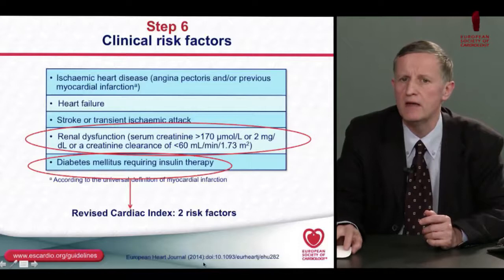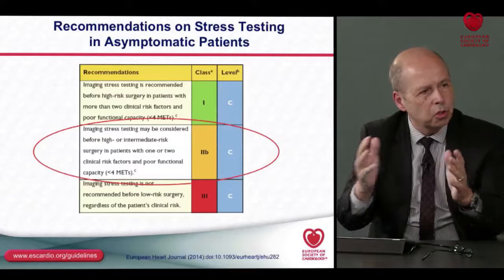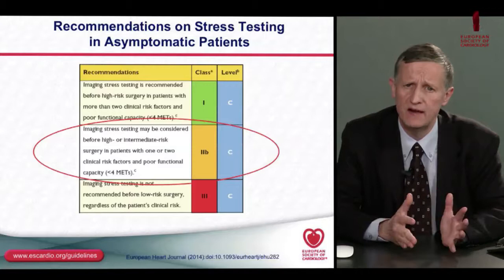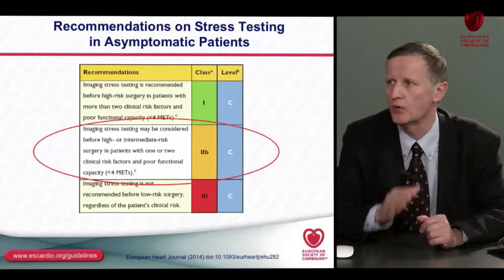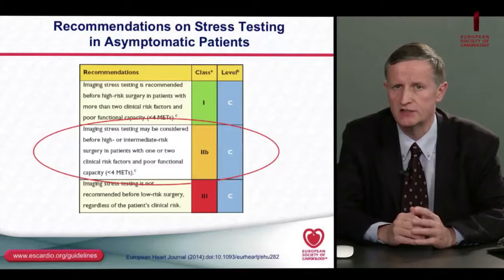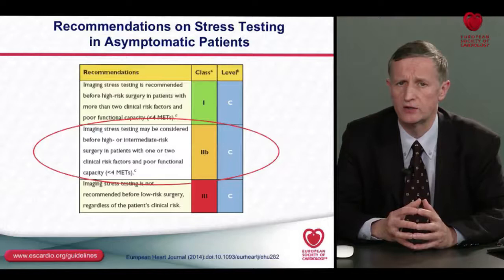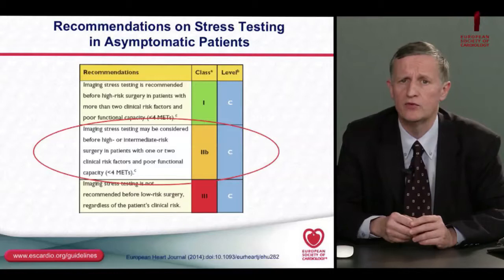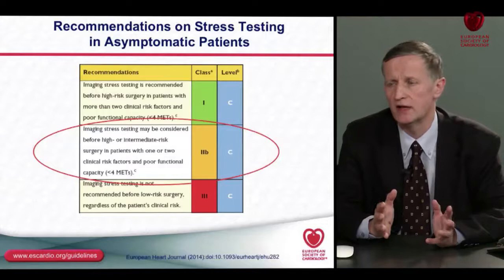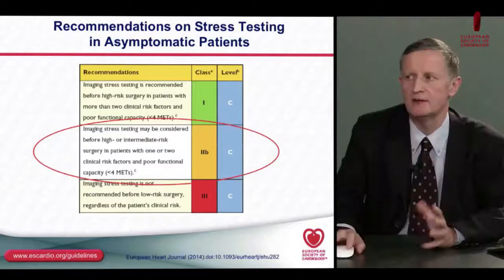A question was raised about whether a six-minute walk test could help determine functional capacity. However, there are no data validating the six-minute walk test with regard to the risk of perioperative complications — it is not included in the guidelines. Looking at stress testing recommendations in asymptomatic patients, the only class 1 recommendation is before high-risk surgery in patients with more than two clinical risk factors. That is not the case here; we face a class 2B recommendation with intermediate surgery and one or two clinical risk factors.